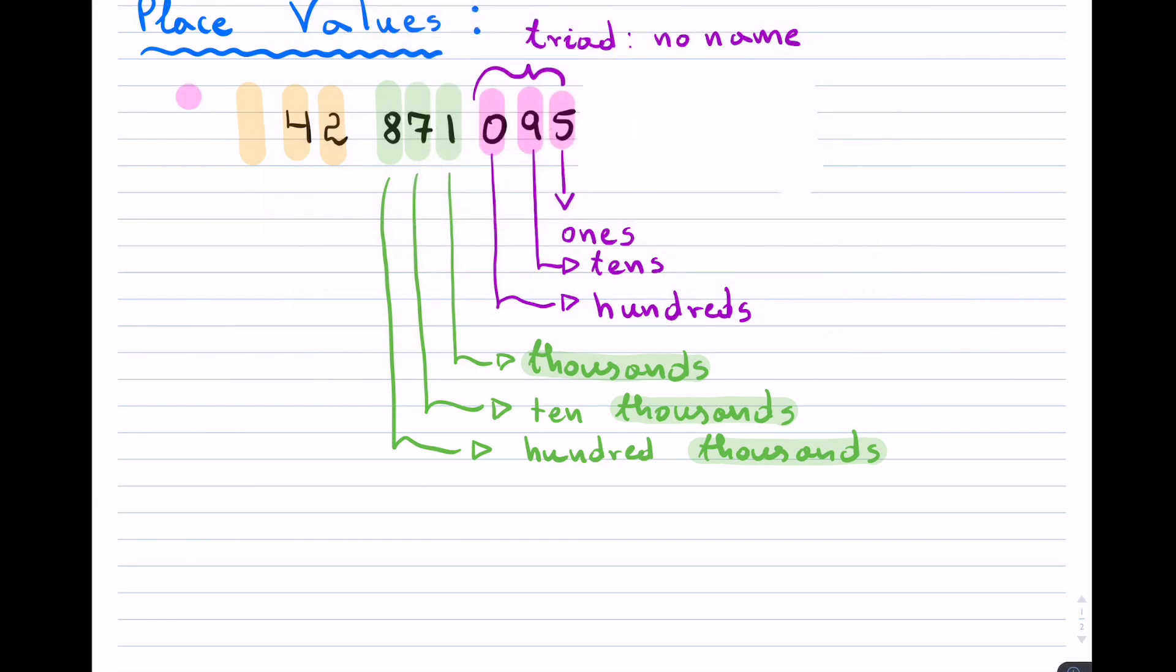If we had more digits, it would have been the billions. We have the ten-billions, and we have the hundred-billions. So I'll just write that in briefly here. So again, this was the millions, then it was the ten-millions, and then finally, the hundred-millions.